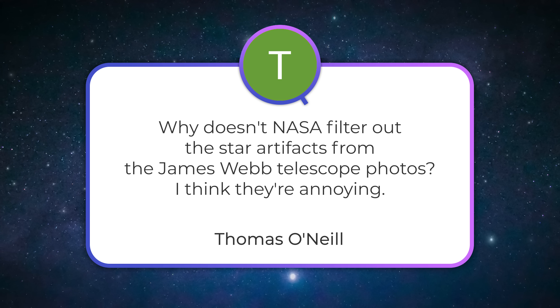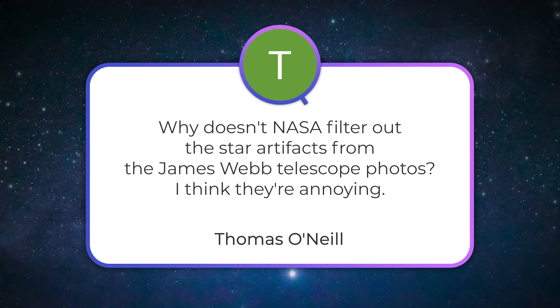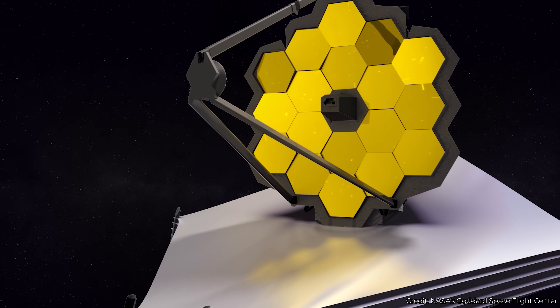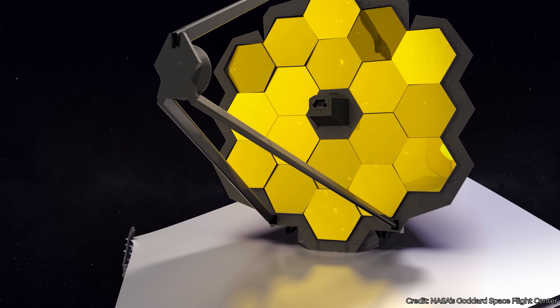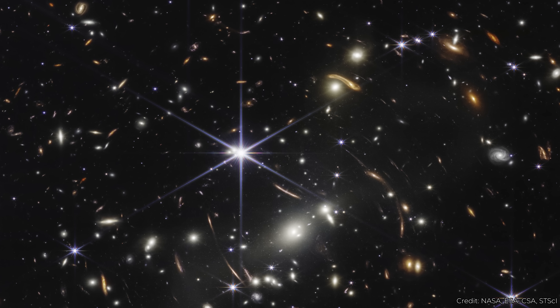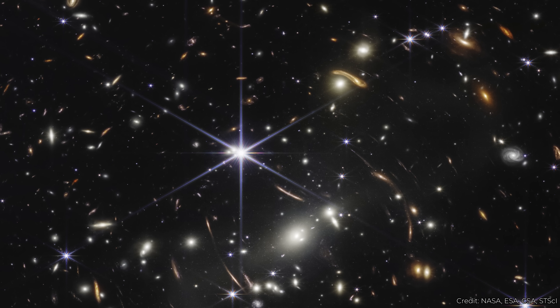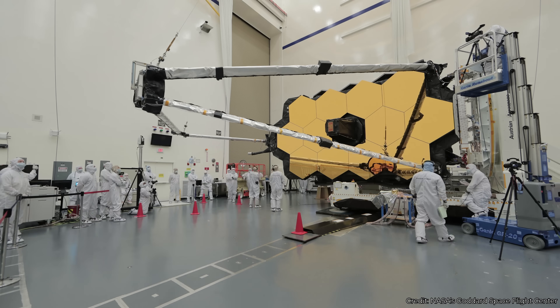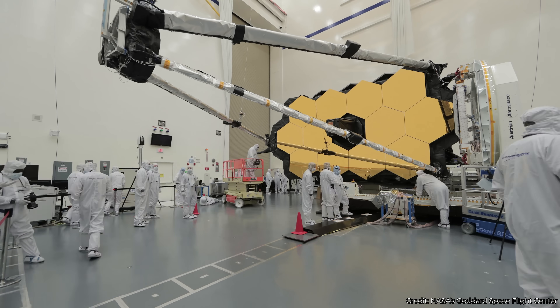Why doesn't NASA filter out the star artifacts from the James Webb telescope photos? The artifacts are those six-pointed star flares coming off of all the stars. Those are caused by the hexagonal shape of the mirrors on James Webb. And if you look really carefully, there are actually eight — the additional two are caused by the struts on the side holding the secondary mirror out on James Webb.